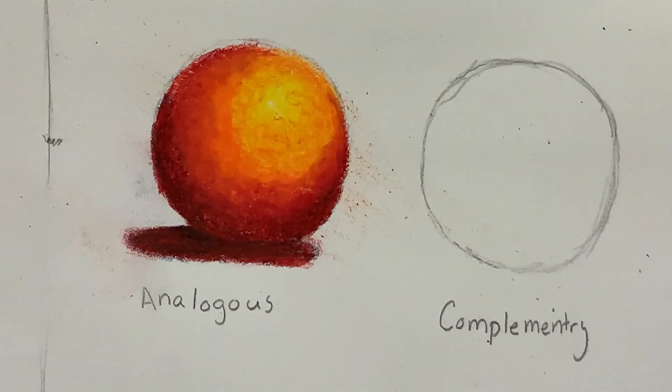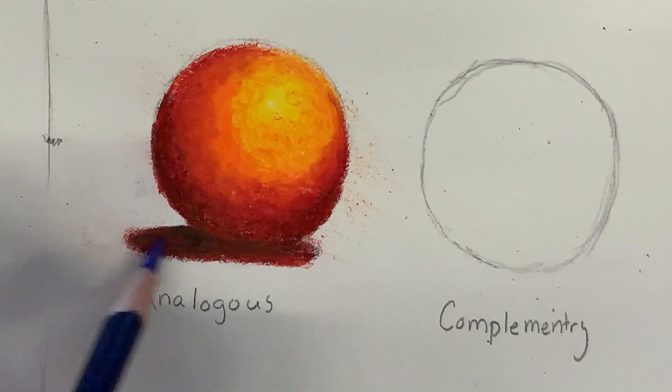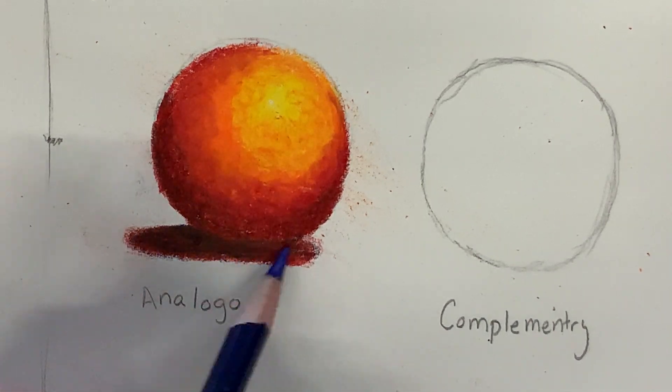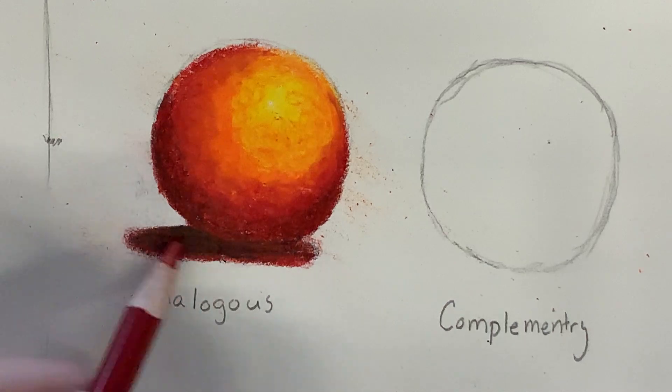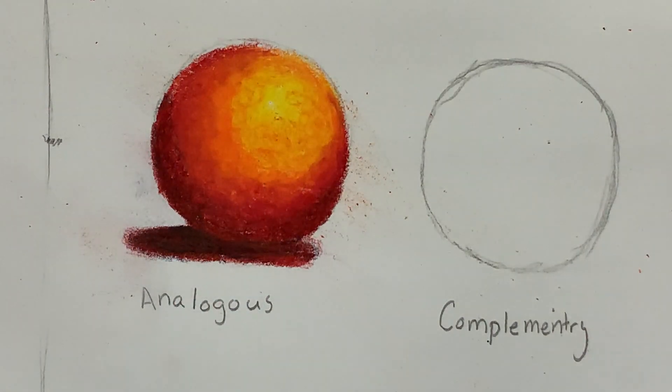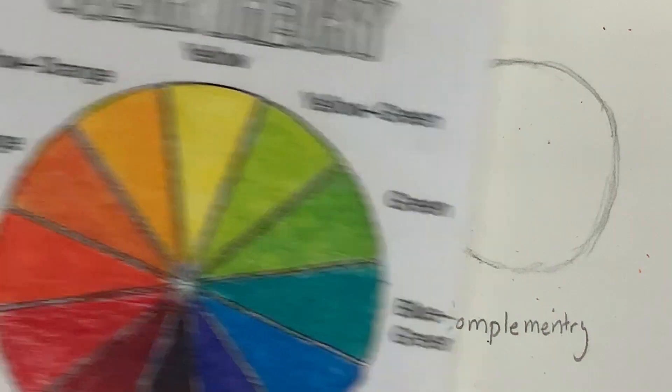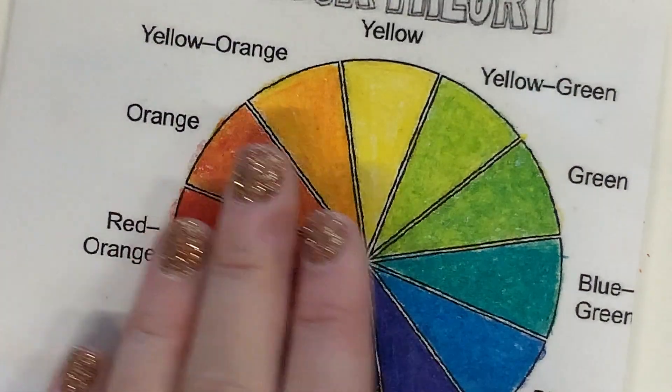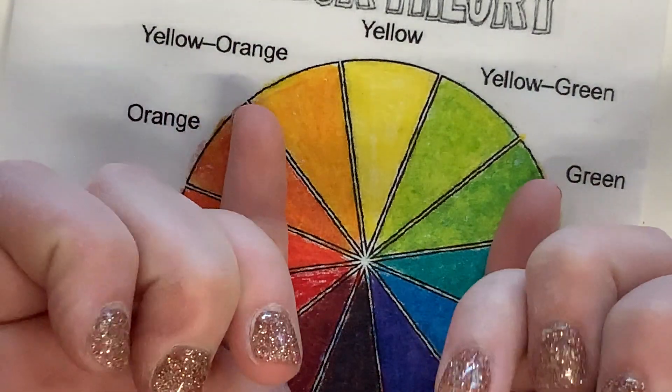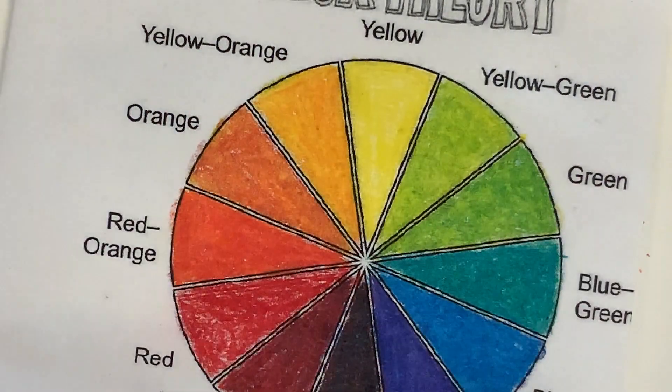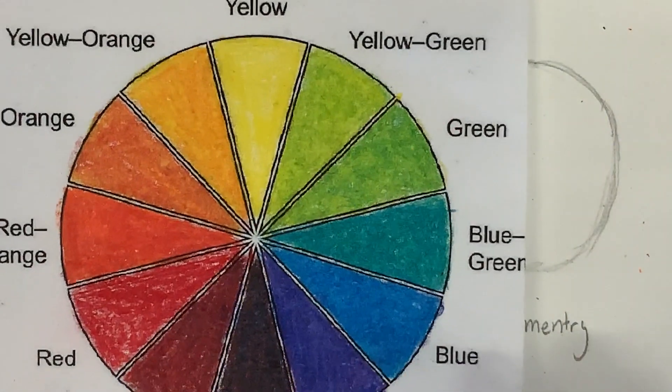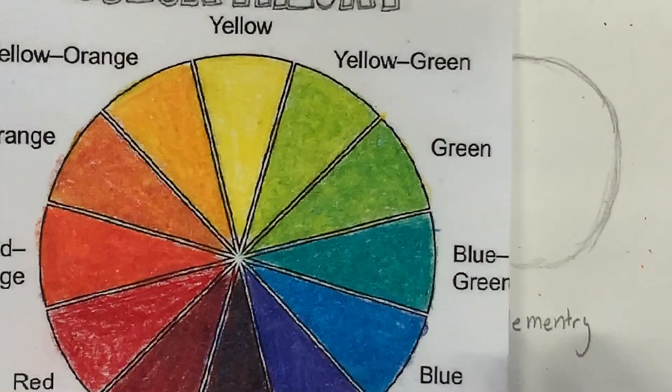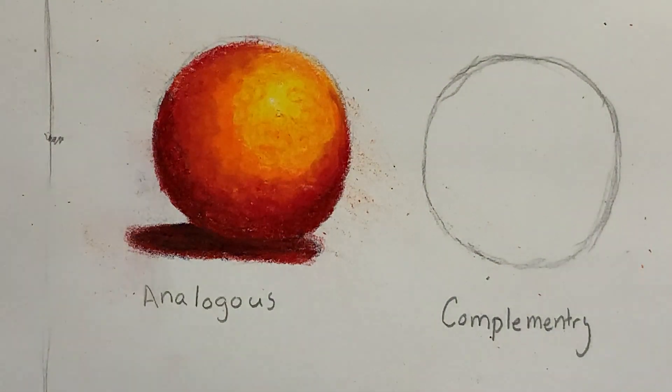All right we've got ourselves an analogous sphere. Y'all are more than welcome to try it using some of our other analogous colors such as any of the cool colors you might want to do or maybe you want to try and get like a yellow orange yellow yellow yellow green combine some cool and warm colors but take your time and y'all got it.